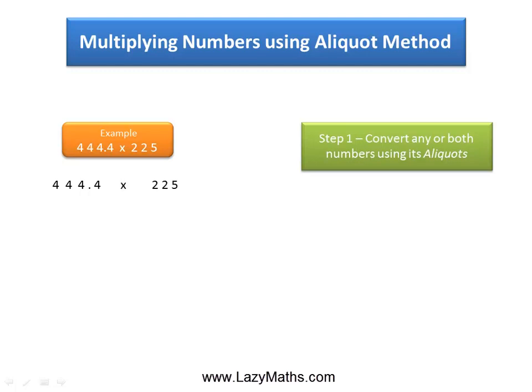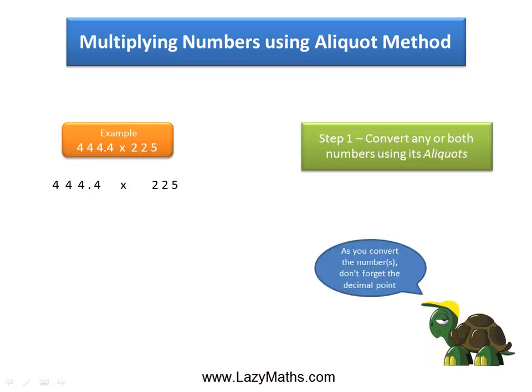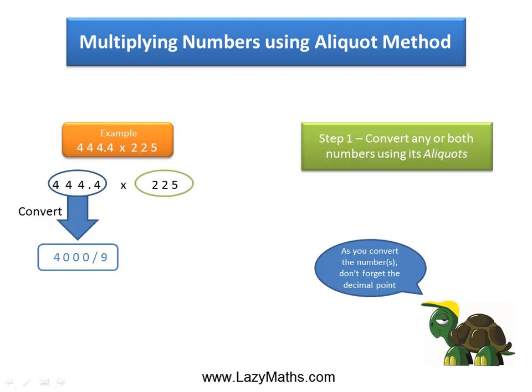The first step is to convert at least one or both of these numbers using its aliquots. 444.4 is the same as 4000 divided by 9, and 225 is the same as 900 divided by 4.